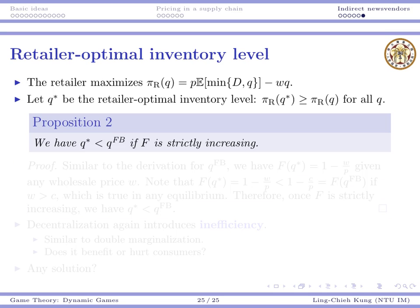For the decentralized case, the analysis is slightly more difficult because the retailer's optimal inventory level q* cannot be written in closed form for a general distribution. Without knowing the distribution, you cannot express q* in closed form, and without q* you cannot formulate the manufacturer's problem in closed form either.